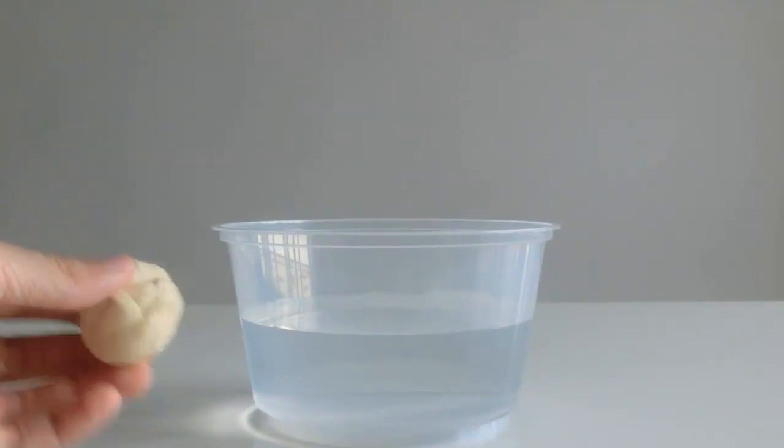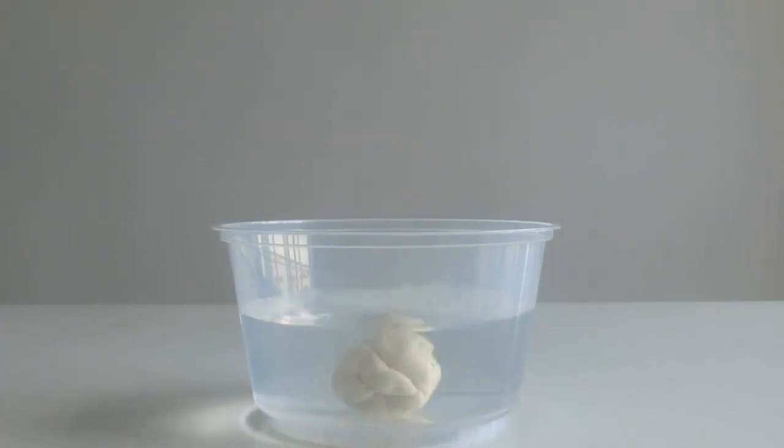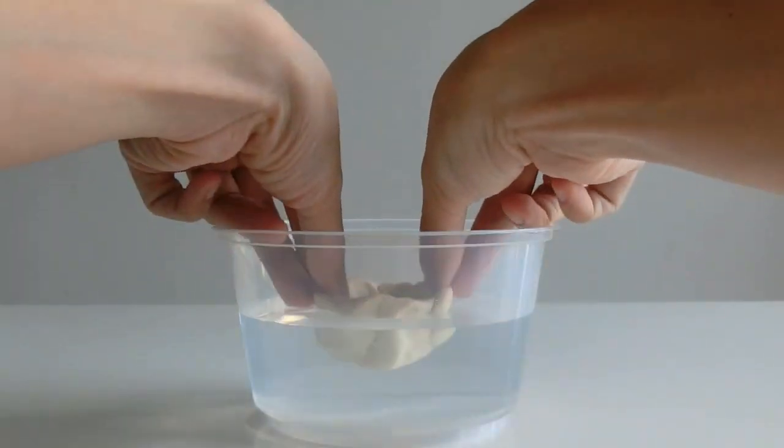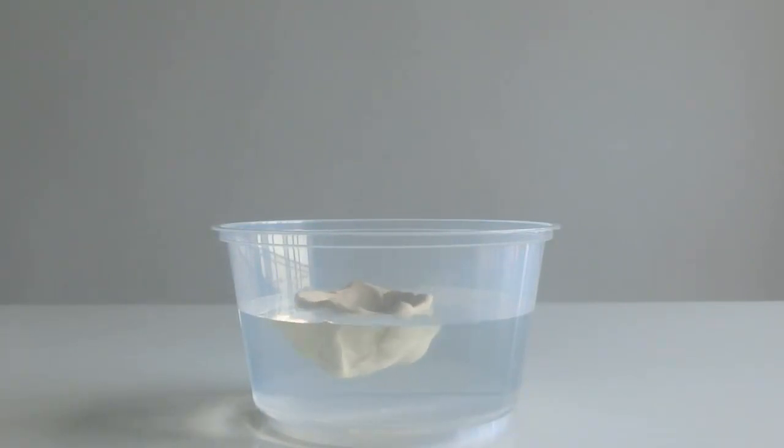A lump of plasticine sinks. It doesn't displace enough water. When molded into a boat, it floats. It displaces enough water.